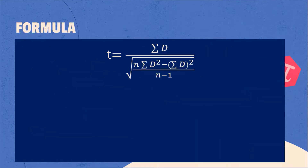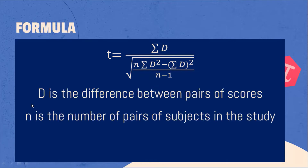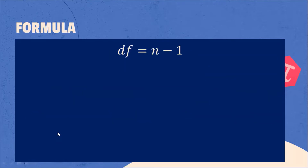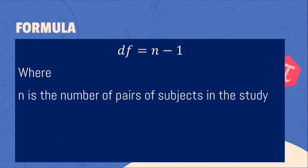What is the formula for t-test dependent? T-test dependent is equal to the summation of d over the square root of n multiplied by summation of d squared minus the square of the summation of d, all over n minus 1. Where d is the difference between pairs of scores and n is the number of pairs of subjects in the study. The degree of freedom is equal to n minus 1, and we use df to look up the critical value from the t-test dependent table.